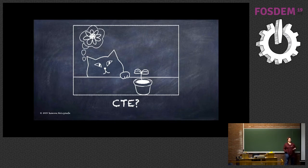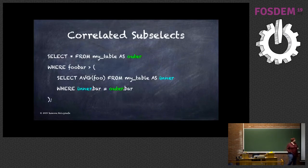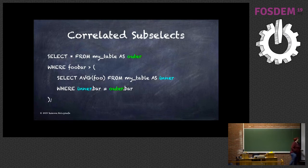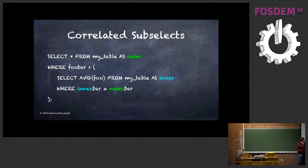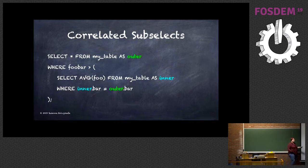Who is using correlated subselects? Let me show you what it is. A correlated subselect is when you have an outer select which you are using in the inner select — where inner.bar equals outer.bar. That's a correlated subselect. I have lots of customers with this use case. Very often I see queries with correlated subselects, and usually they are really slow.